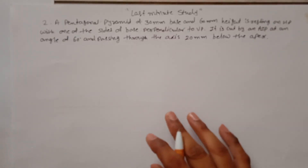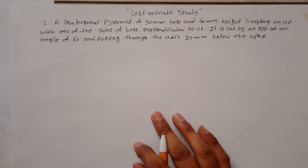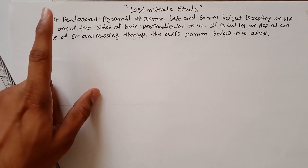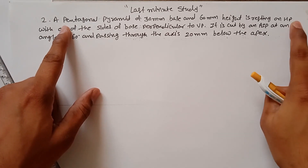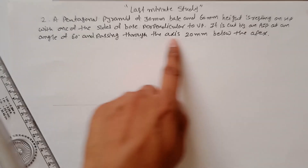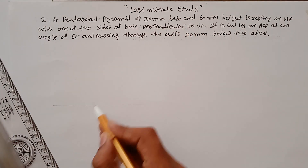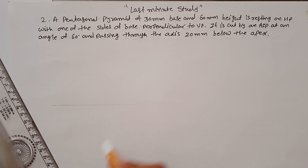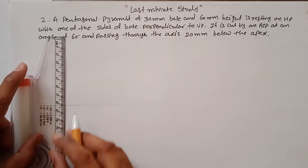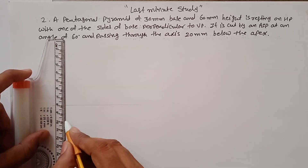Problem number two from development of surface. The solid is a pentagonal pyramid resting on HP. The dimensions are given: the side of the base is perpendicular to VP, so you have to construct a pentagon. The height is 30 mm, which is given to you, so measure a distance of 30 mm here.